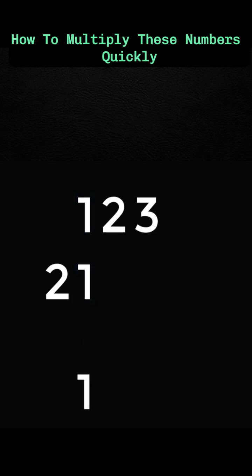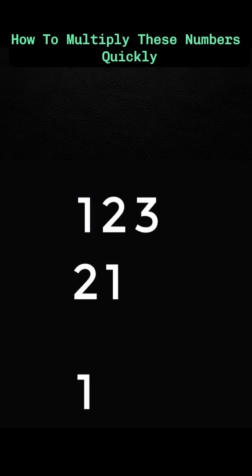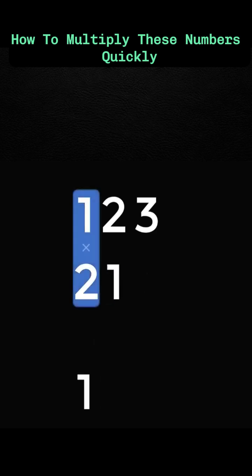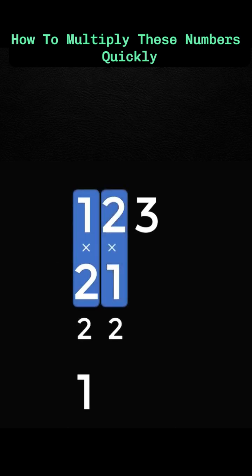Next, slide the dozens number to the right. Next, multiply the parallel numbers and add them both.